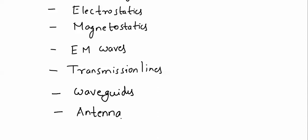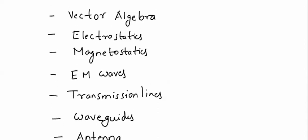Overall, I can divide the entire syllabus into five parts. First is the electric field and magnetic field. Then the second part is EM waves. Third part is transmission lines, wave guides and antenna. Now let's begin with vector algebra first.